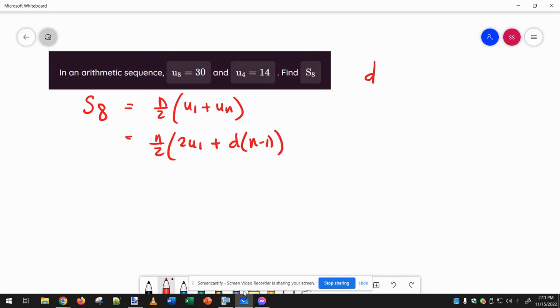But in order to get the difference, we need to do un minus u1 over n minus one. So if I just take my 30 minus 14, and then 8 minus 4, that's going to be 16 over 4. So the common difference is 4.